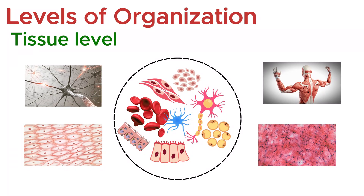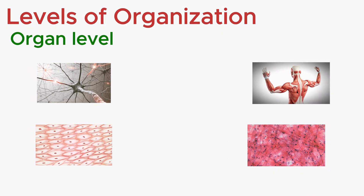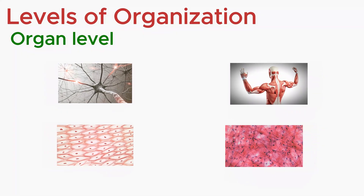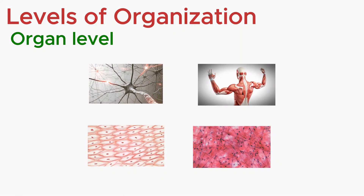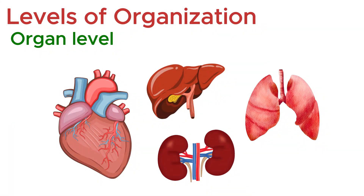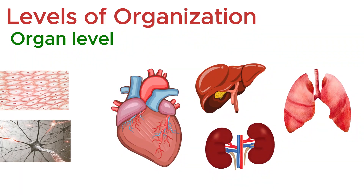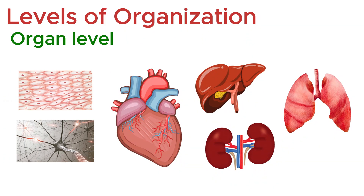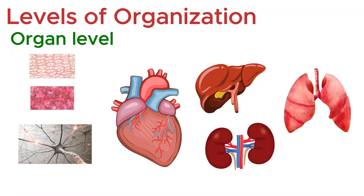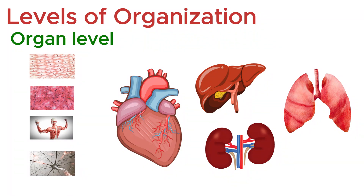Tissues don't exist in isolation. When different types of tissues are arranged together in a coordinated way, they form an organ — a structure with a specific function essential for survival. By definition, an organ is made up of at least two types of tissues, but most organs contain all four: epithelial, connective, muscle, and nervous tissue.